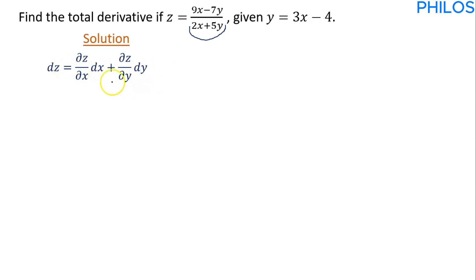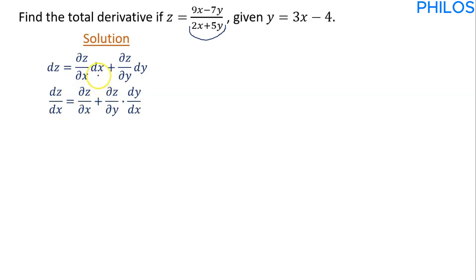Since I would like to find dz over dx, I have to divide through by dx. When I divide through by dx, I get dz/dx equals partial z partial x — because dx divided by dx becomes 1 — plus partial z partial y times dy over dx. I can easily get dy over dx from the separate equation. Let's find each of these three terms one by one and then substitute to get dz over dx.